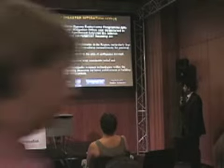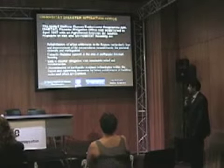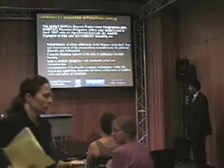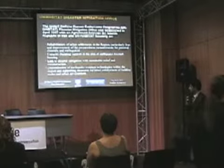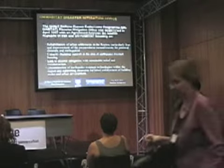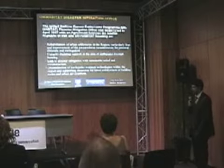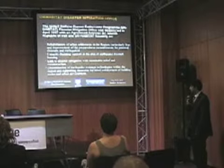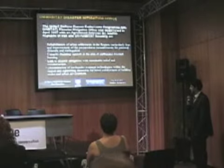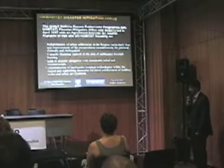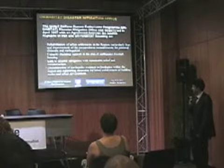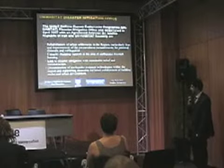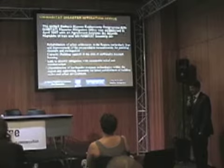The UN Habitat Disaster Mitigation Office was established in 2007 with an agreement between UN Habitat and the Republic of Iran. The objective is to rehabilitate urban settlements in the region, particularly Iran, and to improve preparedness measures for potential disasters, especially earthquakes. Furthermore, to support capacity building in earthquake-resistant housing through reconstruction and retrofitting, and to link disaster mitigation with sustainable relief and reconstruction, disseminating this knowledge throughout the region.